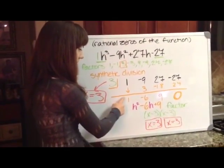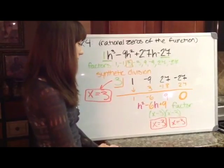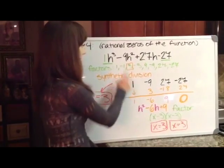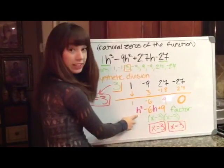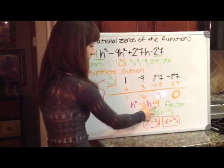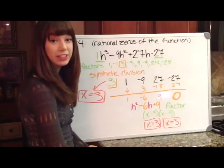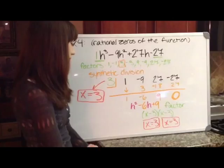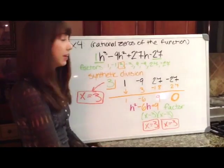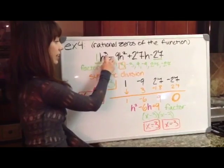So our leftovers down here, the 1, the negative 6, and 9, they can't just be left there. You have to put your variable back. So we use h squared because this was cubed, so now we're going to have one less, so that's h squared. So h squared minus 6h plus 9, and we have to factor that next. And we know that that is h minus 3 multiplied by h minus 3. So h equals 3. And you have to be careful because you can never have more answers than this exponent.